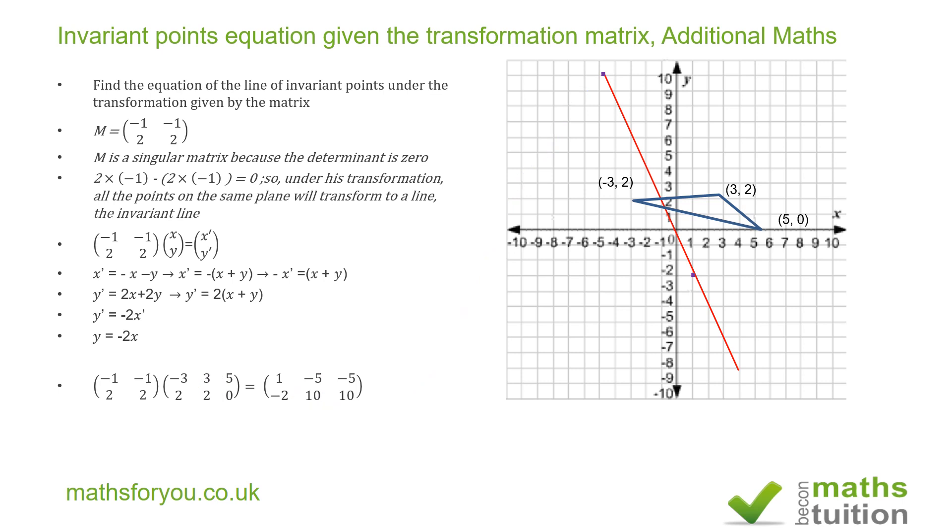And lastly, the point (5, 0) also transforms to (-5, 10). So in effect, these two points (3, 2) and (5, 0) will have this common point there. And so all our points after transformation by this matrix M will appear on the invariant line.